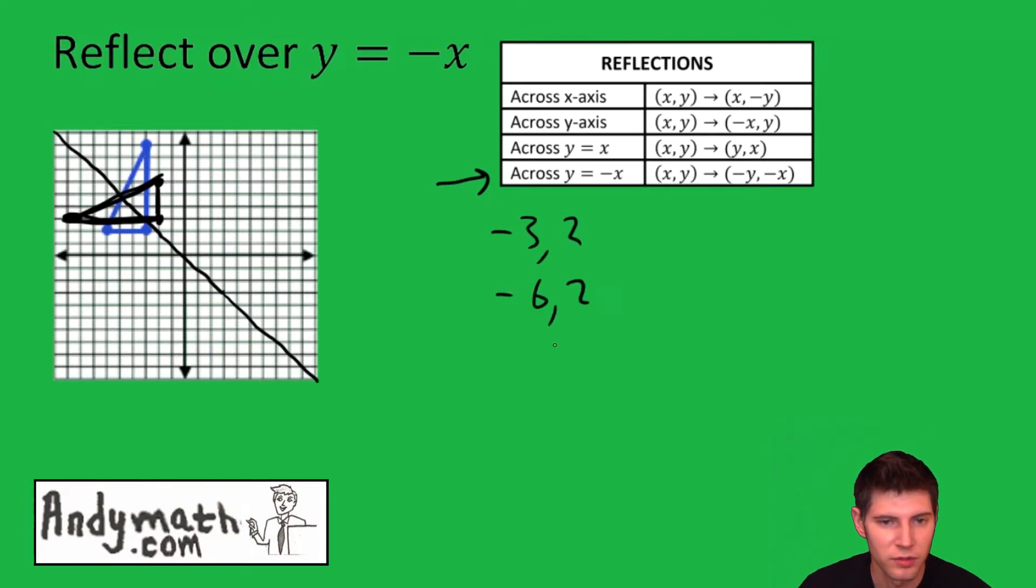Negative three, two. Negative six, two. And negative three, nine. Then we'll apply the transformation.